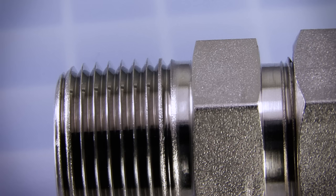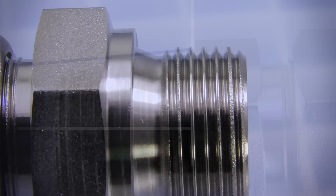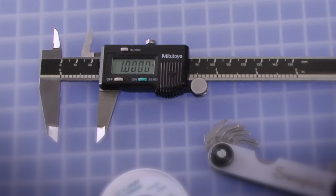The first step to identifying the thread size and pitch is to determine whether the thread is tapered or parallel. Tapered threads are at an angle in relation to the centerline, while parallel threads are parallel to the centerline.